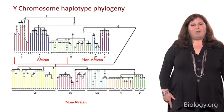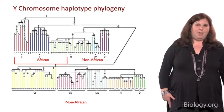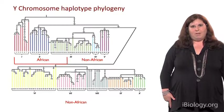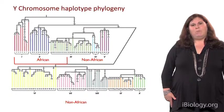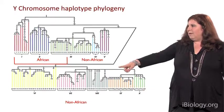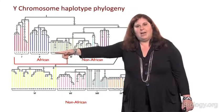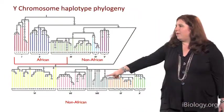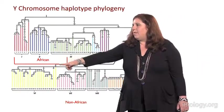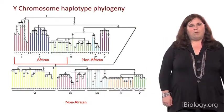By contrast, the Y chromosome is also inherited with no recombination, making it very useful for tracing back through the male lineages. Here is a phylogeny constructed from Y chromosome variation, and as with mitochondrial DNA, the oldest lineages are specific to Africans while the more recent lineages are found predominantly in non-Africans, although some are seen in Africans as well. Again, this is consistent with the recent African origin of modern humans.